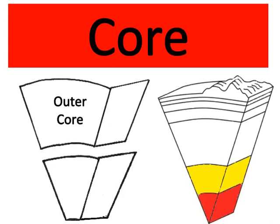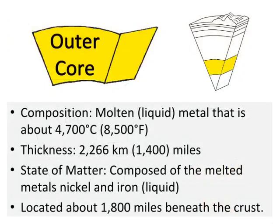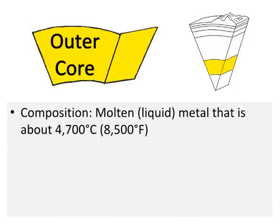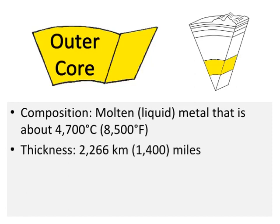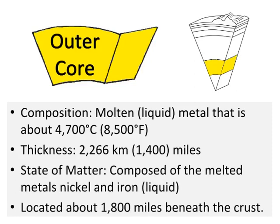Core: there is an outer core and an inner core. The outer core is molten liquid metal at about 4,700 degrees Celsius. It is 2,266 kilometers — or 1,400 miles — thick. It is composed of the melted metals nickel and iron, in a liquid state, located about 1,800 miles beneath the crust.